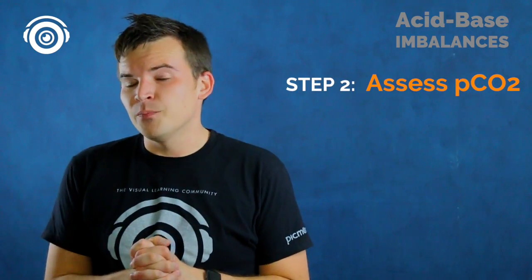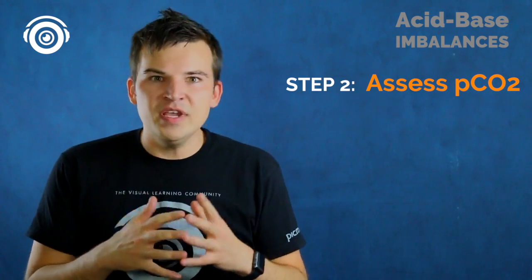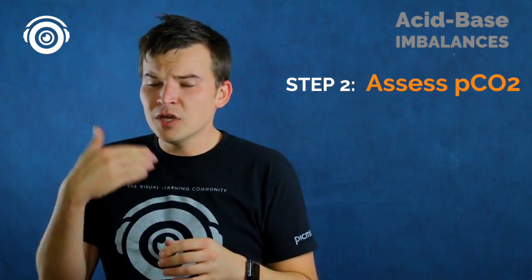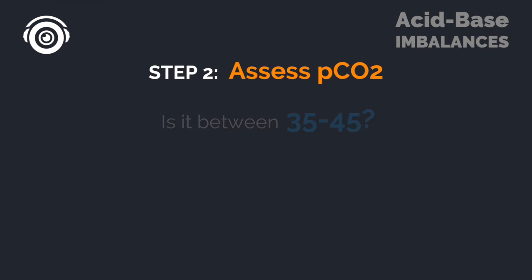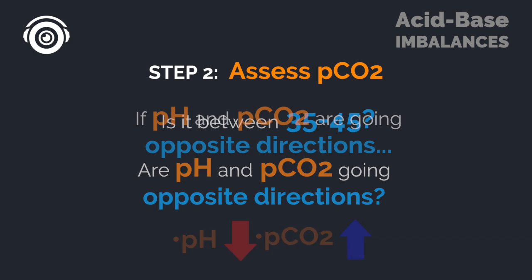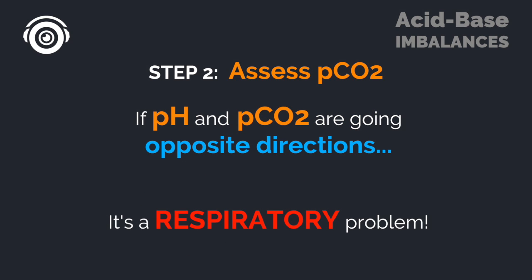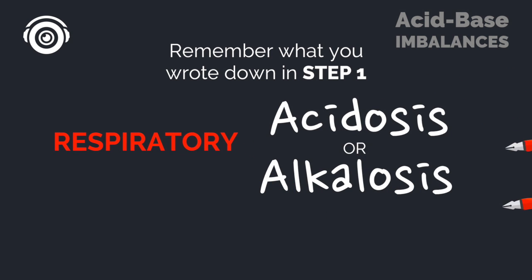Step two is to look at the CO2 level. Remember, CO2 is regulated by breathing. When you look at the CO2, ask: is it within the normal range of 35 to 45? If it's abnormal, compare it to the pH. If CO2 is going in the opposite direction of pH — one up and one down, or one down and one up — that's a respiratory problem. If you've already written down acidosis or alkalosis, you have your full answer: it's respiratory alkalosis or respiratory acidosis.